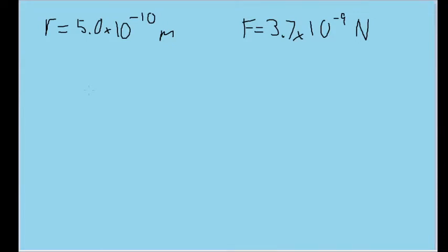In this problem, we have two identical ions separated by 5 times 10 to the negative 10 meters, and there is an electrostatic force acting between them of 3.7 times 10 to the negative 9 newtons.